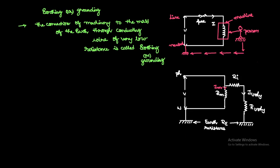Here I am explaining with a diagram. If you observe this diagram, this is an electrical machine. I am considering the condition where the machine is not grounded. Let us see what will happen if the machine is not grounded — a person here is touching this machine.